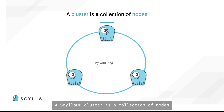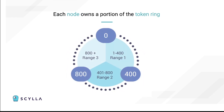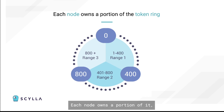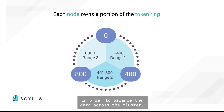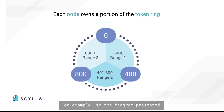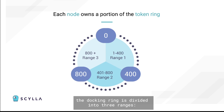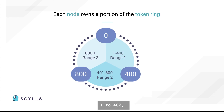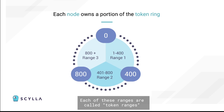A ScyllaDB cluster is a collection of nodes, visualized as a ring. The ring of a ScyllaDB cluster is known as the token ring. Each node owns a portion of it in order to balance the data across the cluster. For example, in the diagram presented, the token ring is divided into three ranges: 1 to 400, 401 to 800, and 801 to 0. Each of these ranges are called token ranges and represent a fraction of the entire token ring.